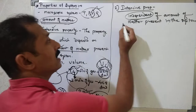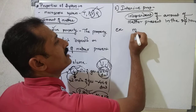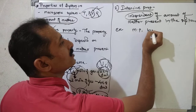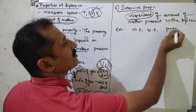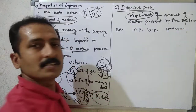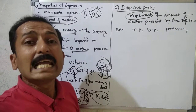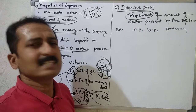Examples of intensive properties include melting point, boiling point, pressure, and density. All these are intensive properties.